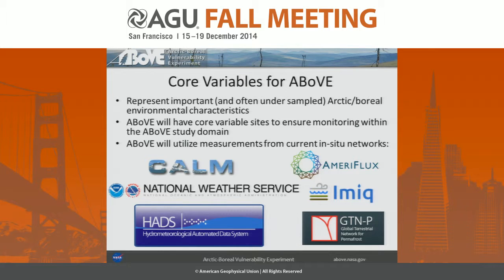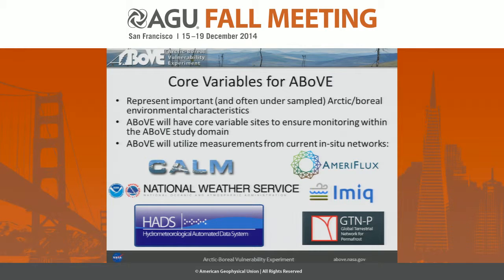We're continually increasing that and trying to anticipate what scientists may need. When proposals come in, we'll go ahead and pull that first so that you don't have to — that's a big time saver. Core variables for ABOVE represent important and often undersampled Arctic boreal environmental characteristics. ABOVE will have core variable sites to ensure monitoring within the study domain, but will also use measurements from current in-situ data networks, including weather station records, hydrometric data, hydrological data including water quality data, borehole temperature data, and things of this nature. Those are what we'd like to stage, since we know it's the data in that region.